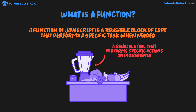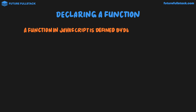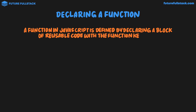So the first thing we need to discuss is how we go about declaring a function. A function in JavaScript is defined by declaring a block of reusable code with the function keyword. We start by defining or declaring our function with the function keyword, which looks like this — it's the function keyword in JavaScript.